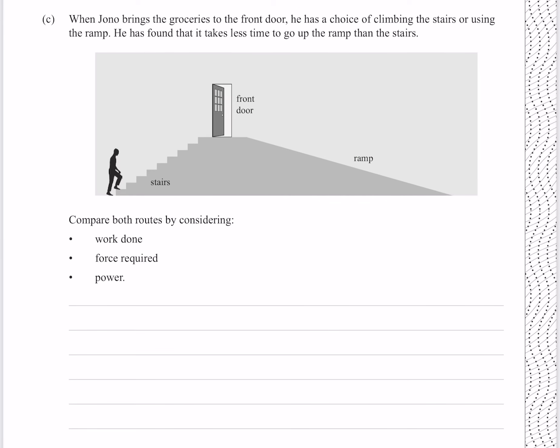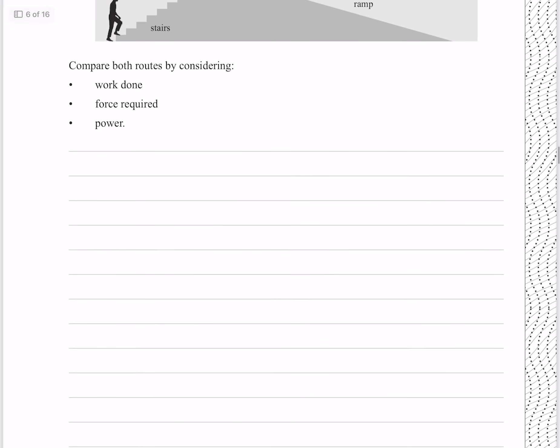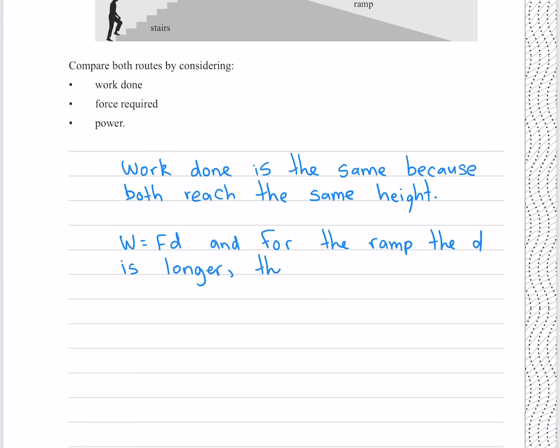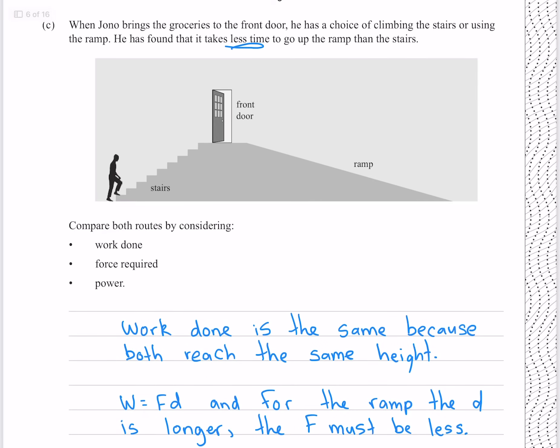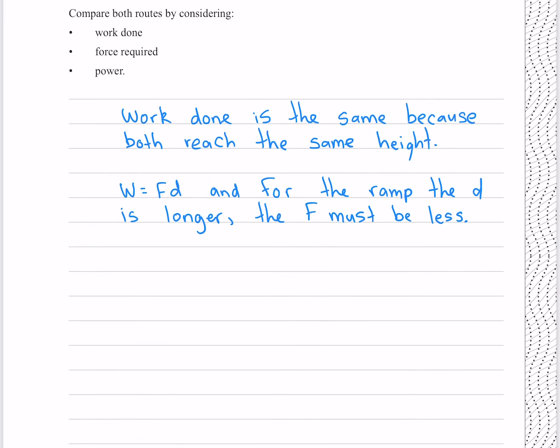When Jono brings the groceries to the front door, he has a choice of climbing the stairs or using the ramp. He has found that it takes less time to go up the ramp than the stairs. Compare both routes by considering the work done, the force required, and the power. Because they both reach the same height, the work done is going to be the same. Recall that work is force times distance, and for the ramp the distance is longer, so the force must be less. Lastly for our power, recall that we're told that it takes less time to go up the ramp. Power is work over time, and the time is less for the ramp, so the power must be greater.